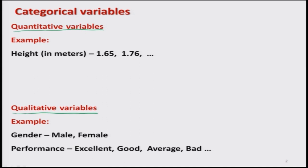For example, if my variable is height, I try to collect data on the height of persons. Suppose my variable is height and I am measuring it in meters. I measure the first person and the height comes out to be 1.65 meters, then the second person comes out to be 1.76 meters, and so on. In this case, all the observations coming out for this variable are quantitative — I can express them as numerical values and those values have interpretation.